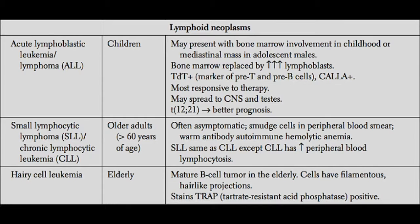You might also see patients become anemic because of a lack of red blood cell production in the bone marrow. Now there's an important cell marker that tells you that the B cells and T cells making up the lymphoblastic leukemia are immature, and that cell marker is TdT — terminal deoxynucleotidyl transferase.